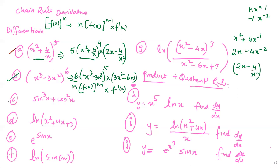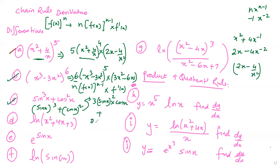Coming to the third one, you take these separately: sin(x) to the power 3 plus cos(x) to the power 2. When you do the derivative, n is 3 for the first part, so it's 3 sin²(x) times cos(x), plus 2 cos(x) to the power 1 times the derivative of cos(x), which is minus sin(x). So this is the derivative of sin³(x) + cos²(x).